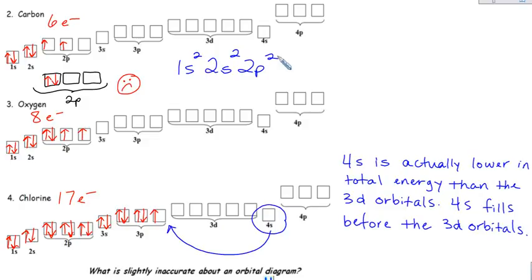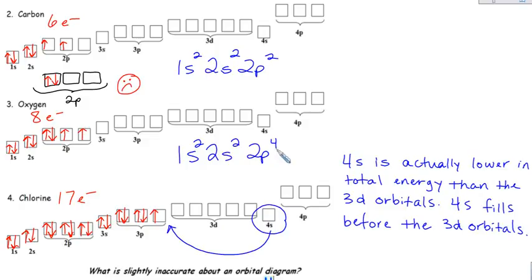Let's try oxygen: 1s2, 2s2. This time the 2p has 4 total, so it adds up to 8. Oxygen has 8 total electrons. But again, when I see 2p4, it doesn't show me that there are 2 pairs and 2 singles — we just have to know that. There are 3 p orbitals; if you have 4 total p electrons, two of them are going to have to get paired and the other two are single.